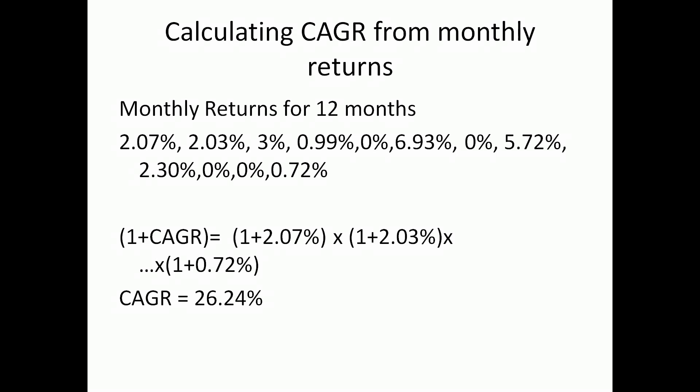That equation is turned around to calculate the CAGR, which is 26.24%. So if I have a monthly return of 2.07% in January, 2.03% in February, 3% in March and so on, the annual return for that set of monthly returns is 26.24%. Now this idea will be used to calculate the upside and downside capture ratios as shown below.